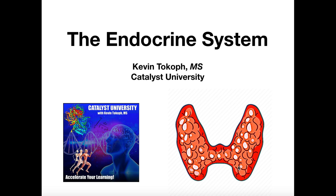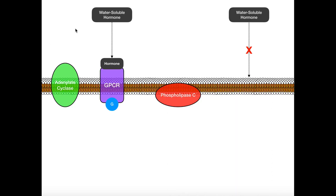When we talk about these hormones, there are two different classes, and they're going to function differently. The two major classes are the water-soluble hormones and lipid-soluble hormones. The way they function has to do with whether or not they can cross the plasma membrane of a cell, because in order to cause an effect on a target tissue, the hormone has to somehow cause an effect on the inside of the cell.